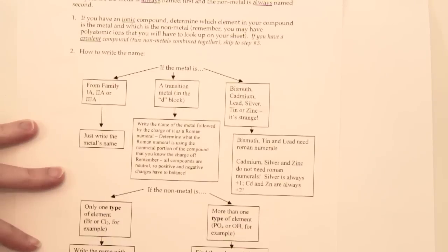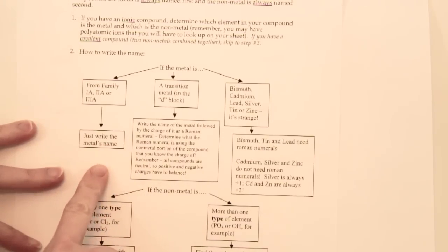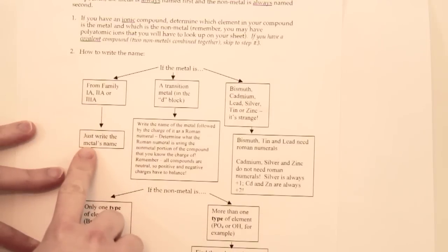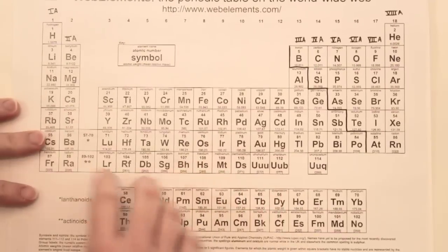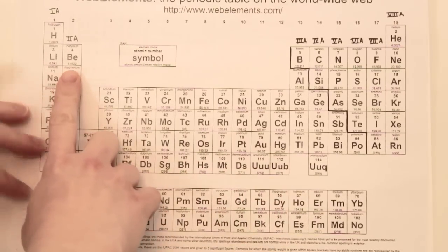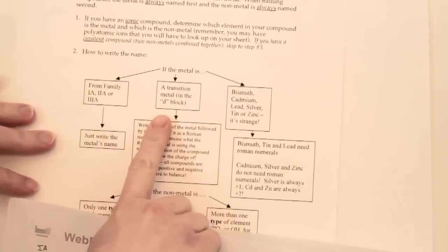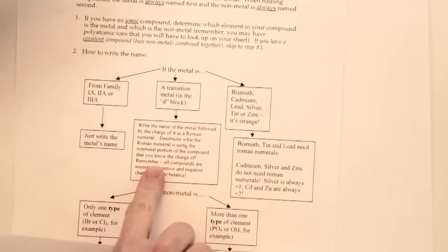We're going to look at just the ionic compounds to start. The way you name an ionic compound varies depending on where the metal is from. If the metal is from family 1A, 2A, or 3A on the periodic table — the first three columns — all you have to do is write the metal's name. If it's a transition metal in the middle, you'll need some additional information.